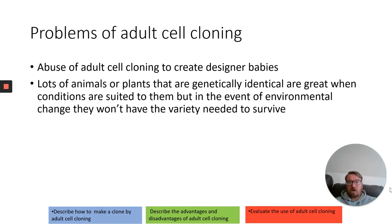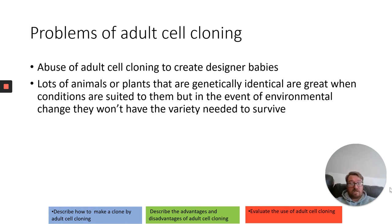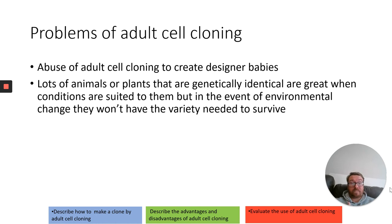Onto the problems. A large concern surrounds the idea of abuse — people worry about creating designer babies, choosing their offspring to have certain eye colours or hair colours. Currently it is not ethically acceptable to experiment on humans, though this was supposedly done in a study in China. The other issue with adult cell cloning is that if all organisms are genetically identical, one disease could potentially wipe out the whole community, because the variety needed to survive environmental changes won't be present.